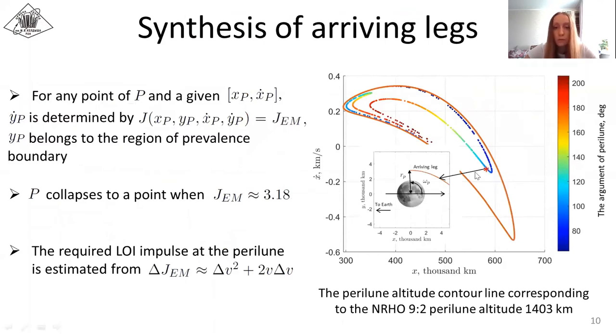Let P denote the inner points of the gateway. Each point of P produces an arriving trajectory with certain values of perilune distance and argument of perilune. So it is reasonable to target corresponding points of the gateway to obtain a trajectory with desired values of the perilune distance and argument of perilune. However, P collapses to a point when the value of the Jacobi integral is approximately equal to 3.18. It means that the trajectories corresponding to such values of the Jacobi integral should be obtained by applying a lunar orbit insertion impulse at the perilune, that may be estimated from the following formula.